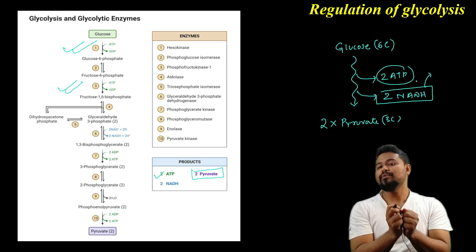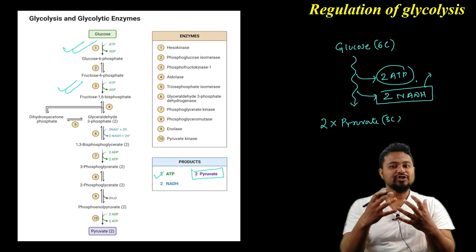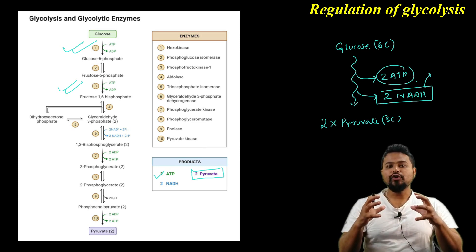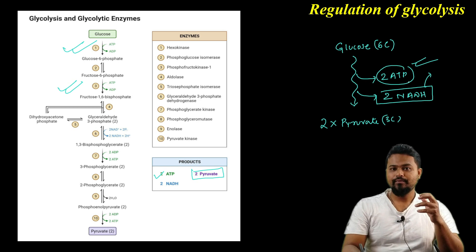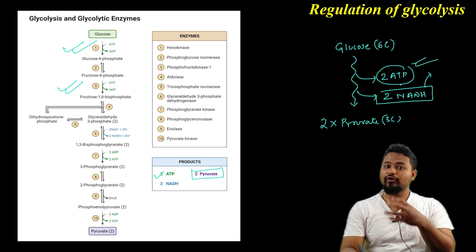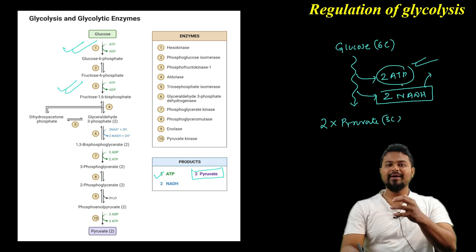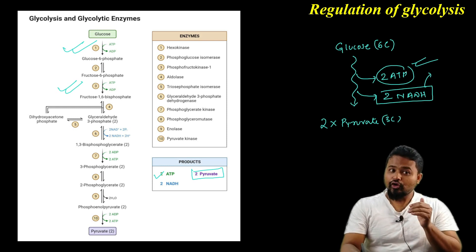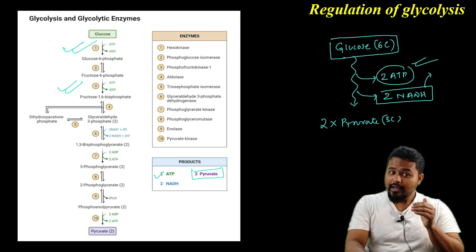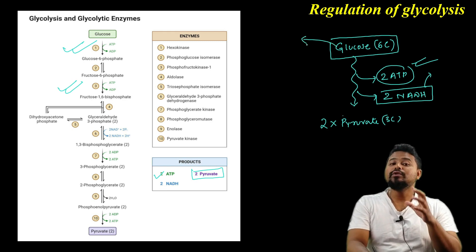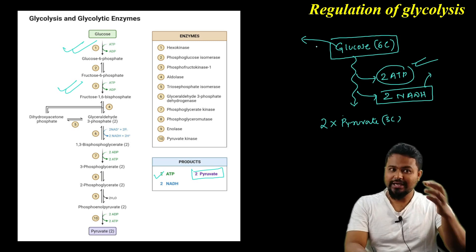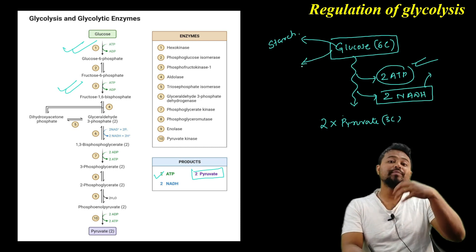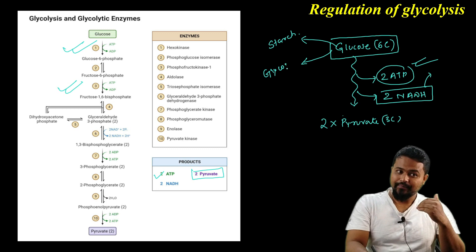So we have an important step — an important process — glycolysis. This process can be regulated. Why? Because the cell already has a very high amount of ATP present. The cell has enough energy. If the cell is not actively dividing or actively growing, then it has immune energy. So this glucose will be stored — glucose will be stored in the form of glycogen.